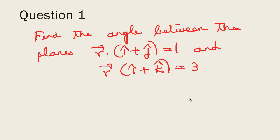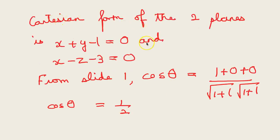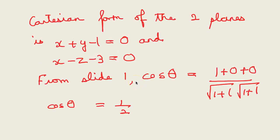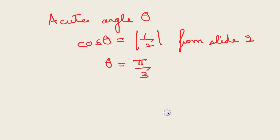Problem 1: Find the angle between the planes r·(i + j) = 1 and r·(i + k) = 3. We convert to Cartesian form: the first plane is x + y − 1 = 0 and the second plane is x − z − 3 = 0. Using the formula, cos θ = (1·1 + 1·0 + 0·(−1)) / (√(1+1) × √(1+1)) = 1/2. So the acute angle is π/3 or 60 degrees.